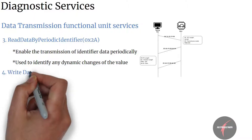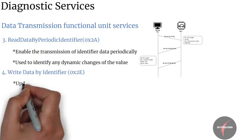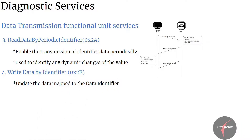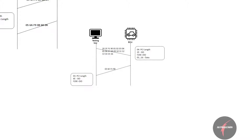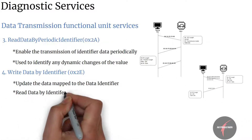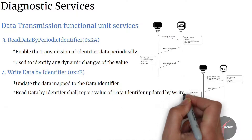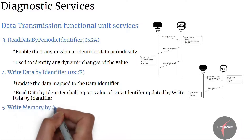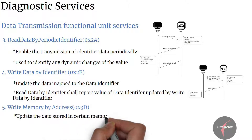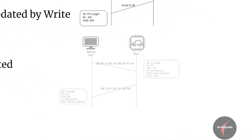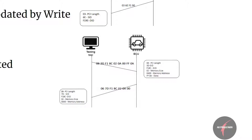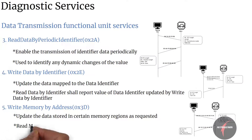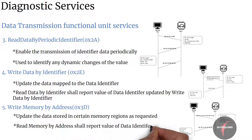Next, we have write data by identifier. This service would update the data mapped to the data identifier stored in the ECU. Hence, writing new data to an identifier would change the value reported by the identifier when requested by the read memory by address service. With this, we have completed the data transmission functional unit services.